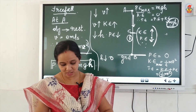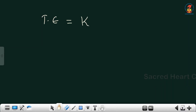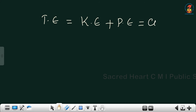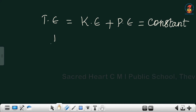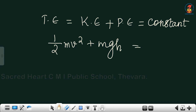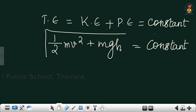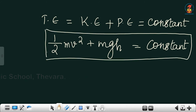Total energy, which equals kinetic energy plus potential energy, always remains constant. That is, ½mv² plus mgh always remains constant. This is the mathematical formula for the law of conservation of energy.